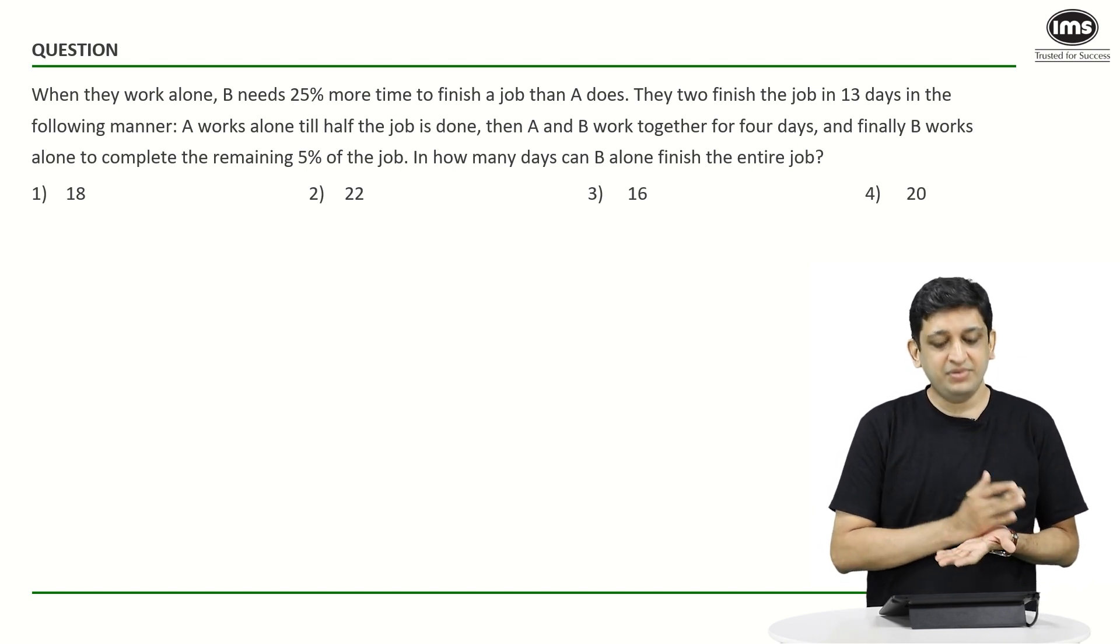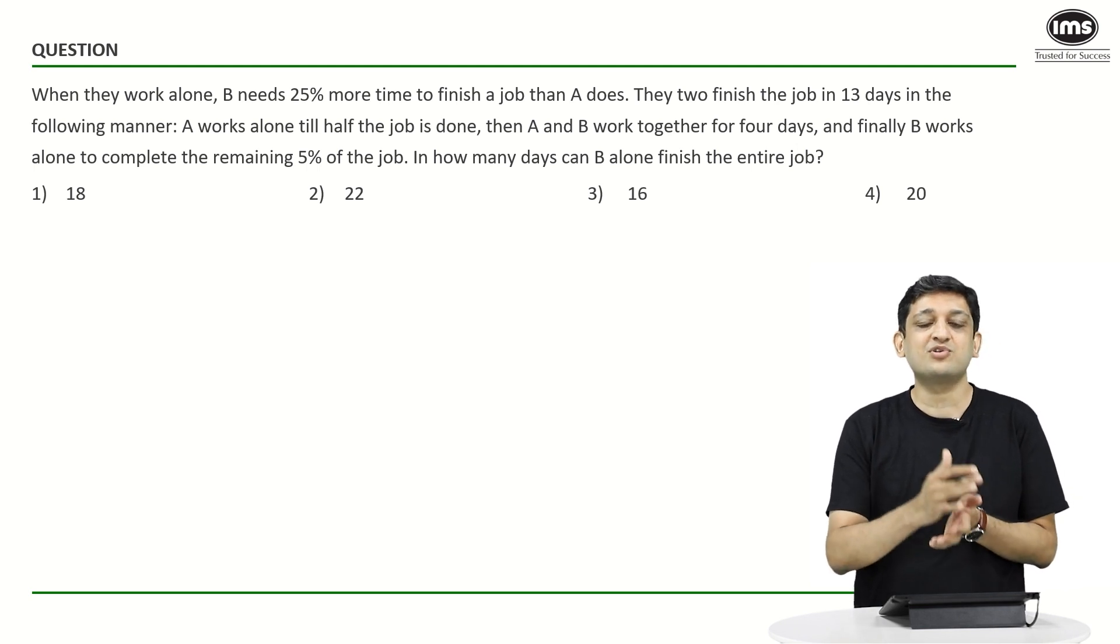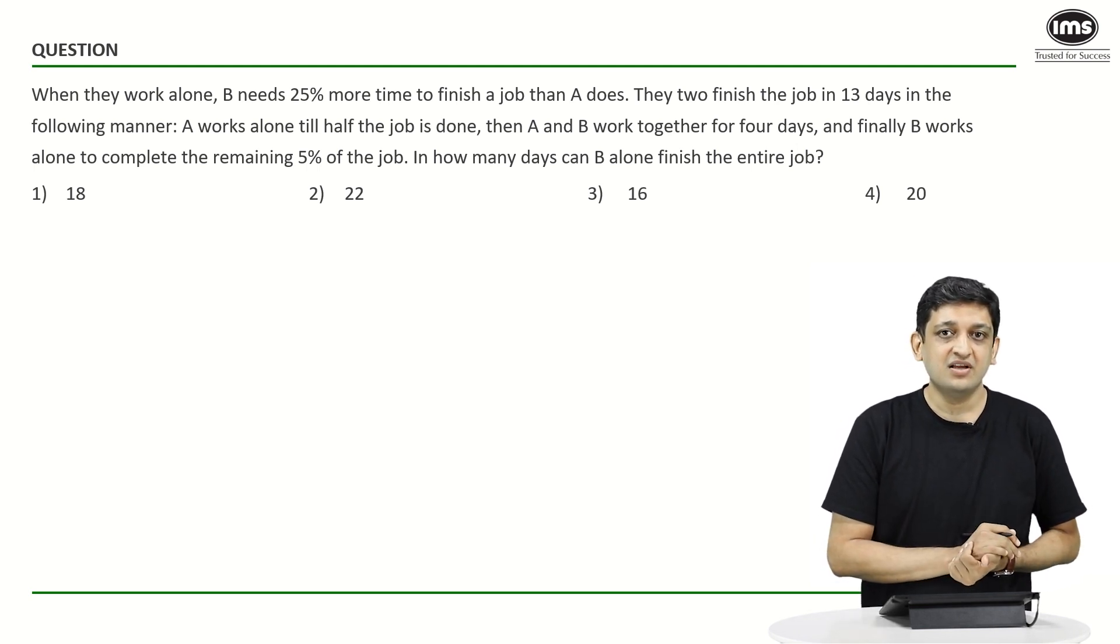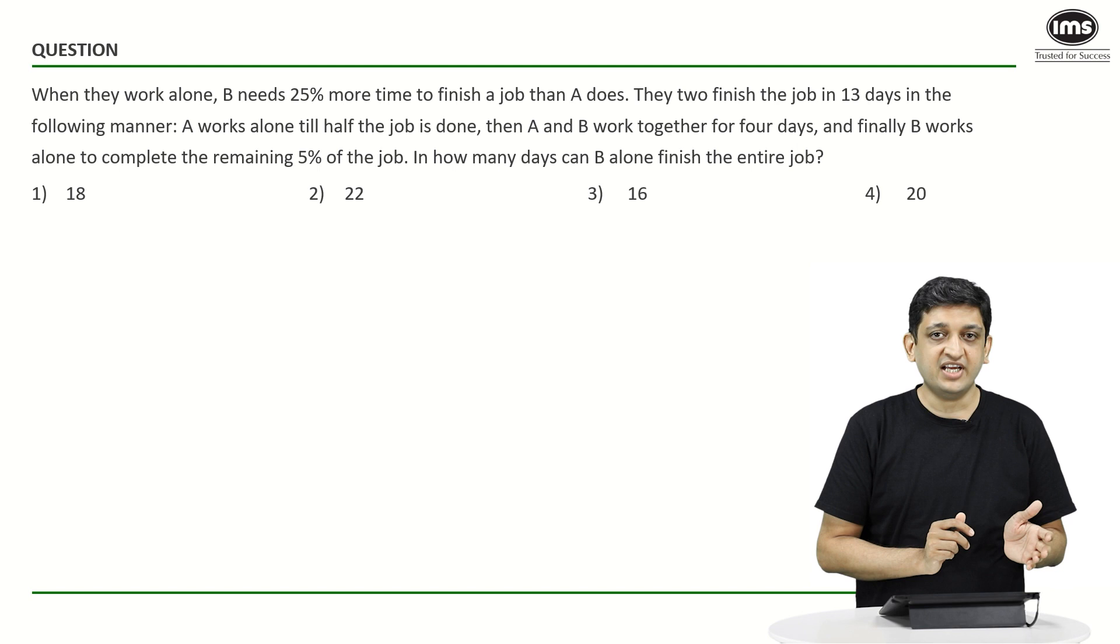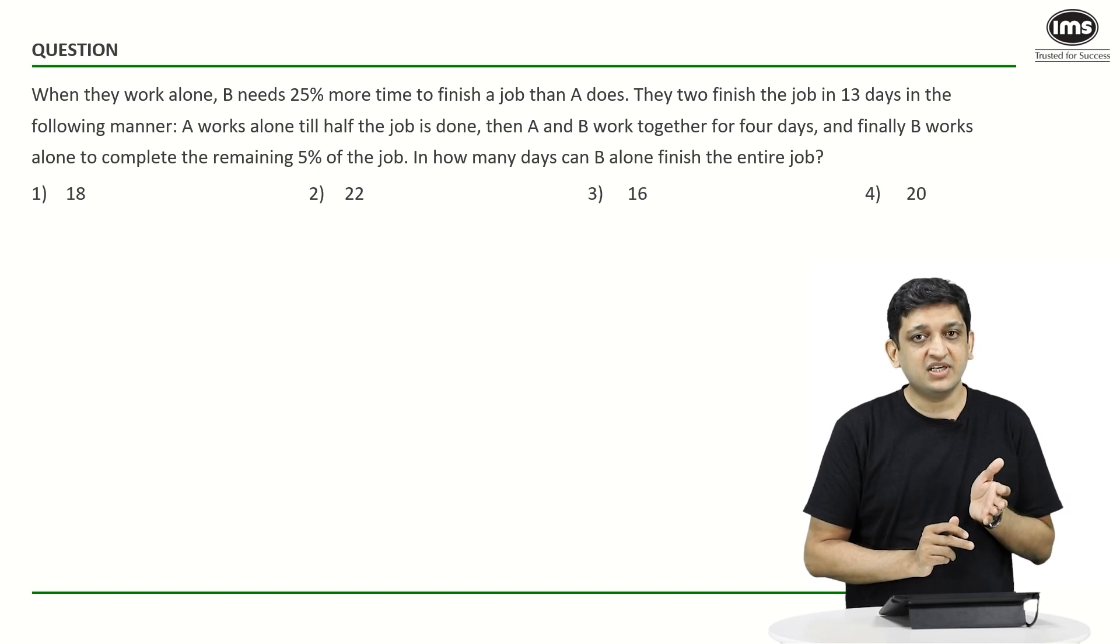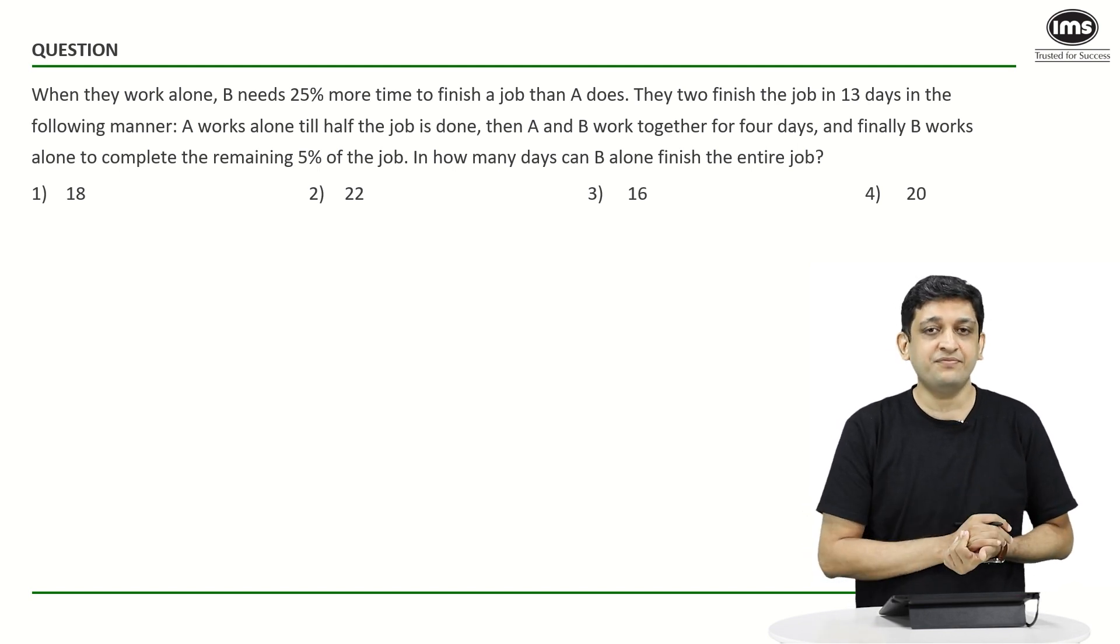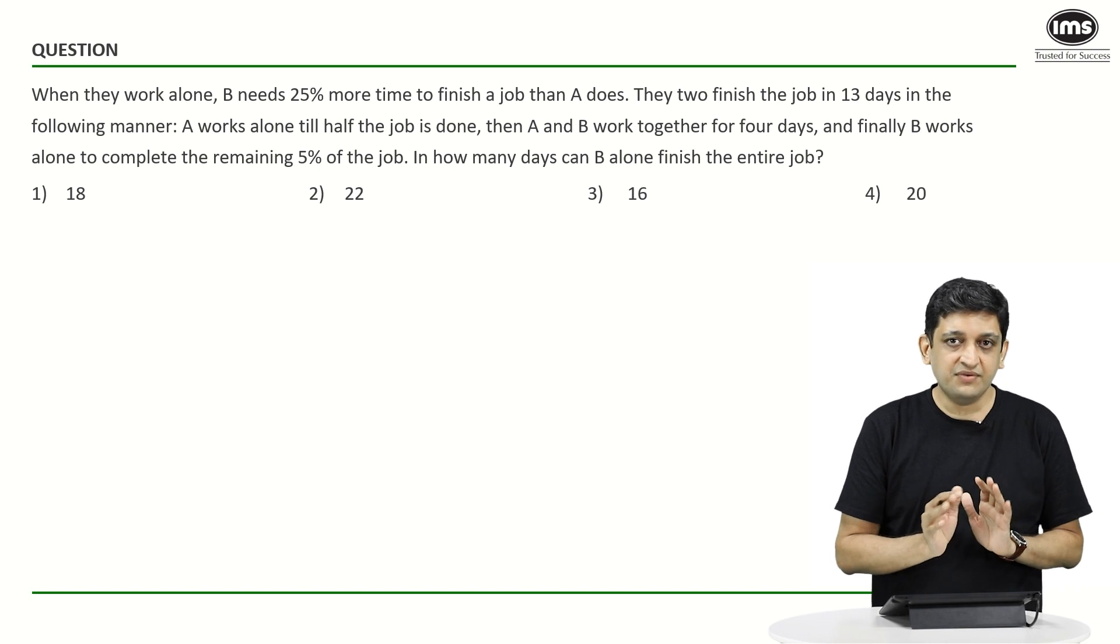Now the other interpretation of this is, this is happening because B is working at 4 fifth of the efficiency of A. Very important thing to note here, because both of them are doing the same amount of job. B is taking 5 fourth of the amount of time, which means that B is working at 4 fifth of his efficiency.